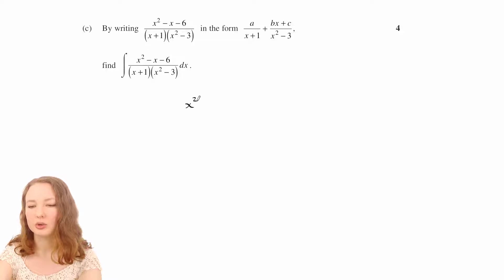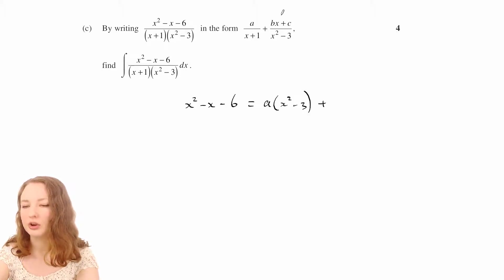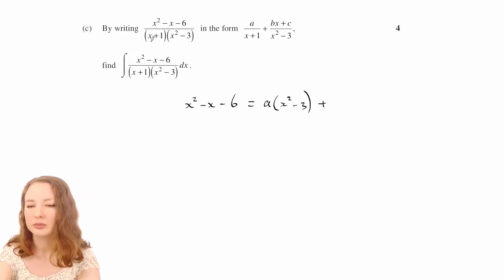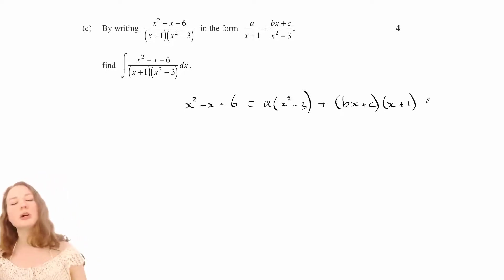So on the left, you get x squared minus x minus 6, and then on the right, we've got that times all of that. So when you do that bit, that's going to cancel with that, and you're going to get just a times that. And then you've got that times that.